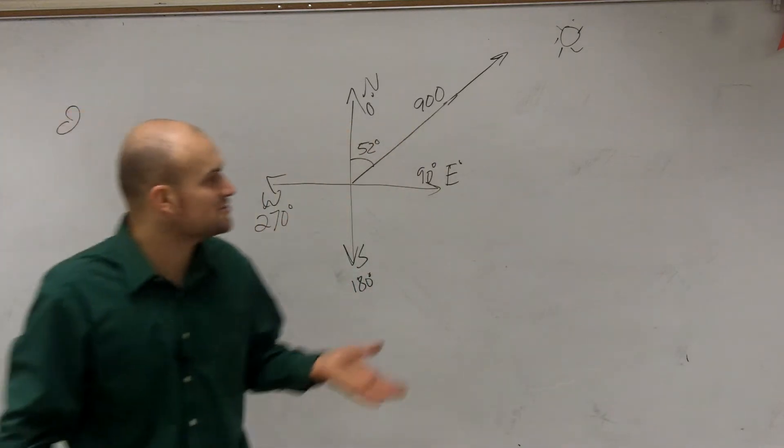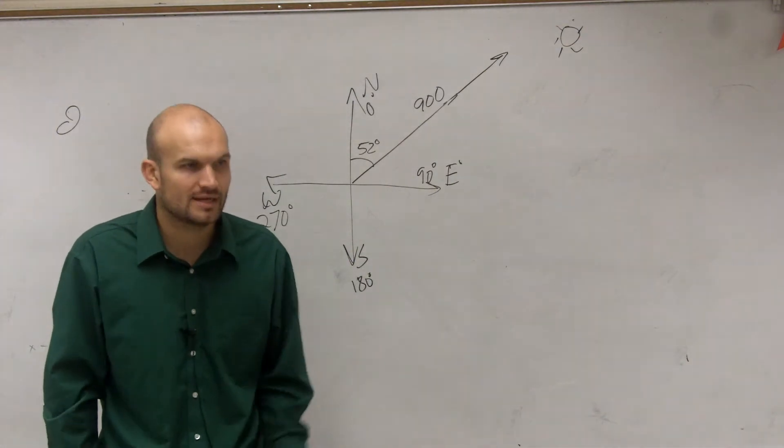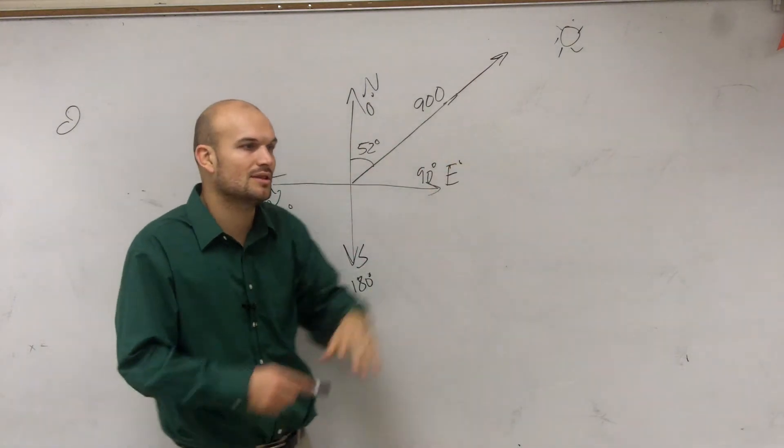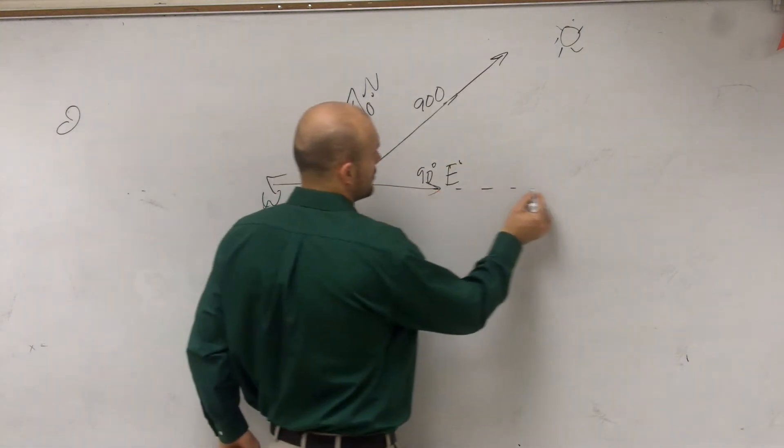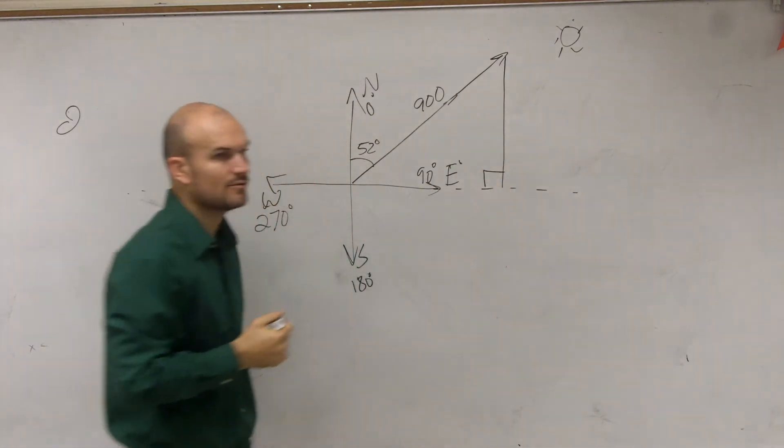to find out any values, we have to create a right triangle. You have to create a right triangle. So the best right triangle that I'm going to see is if I draw a perpendicular line down to my horizontal axis, I will have a right triangle.